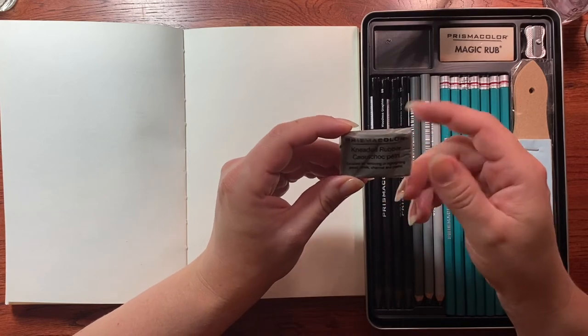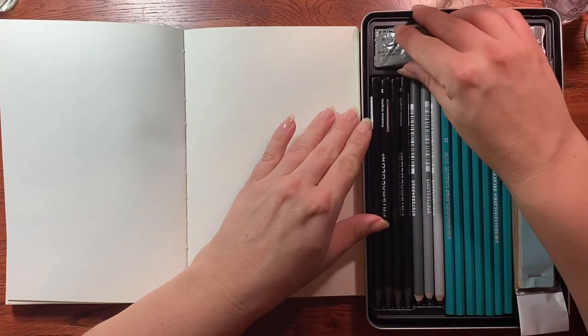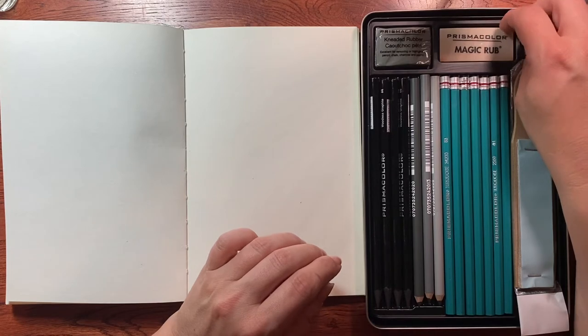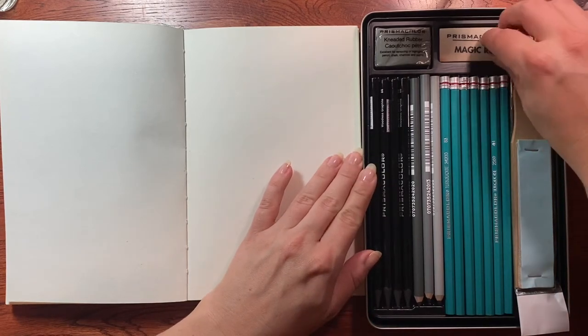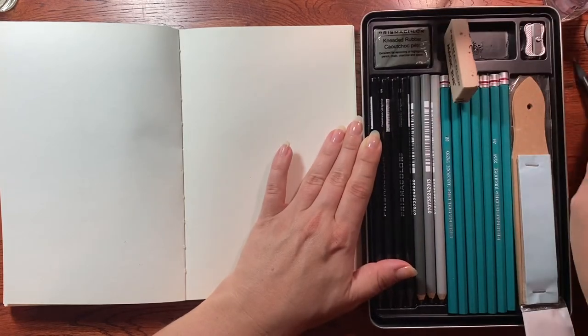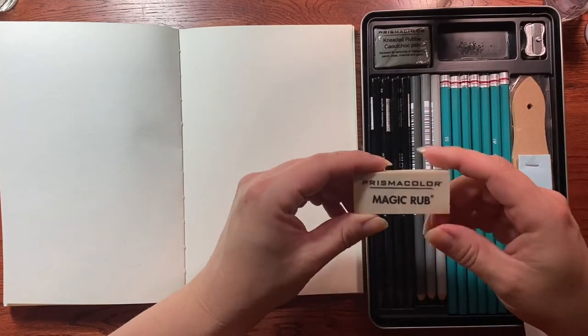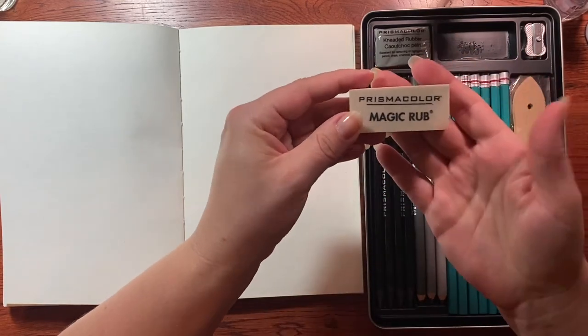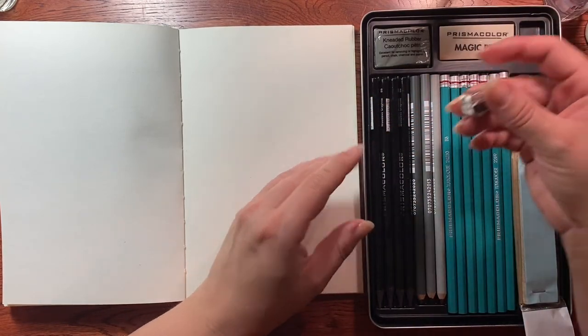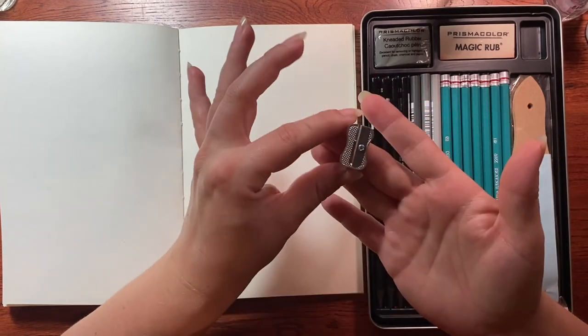I think what you're supposed to be able to do is just mold this like clay and, you know, mold it to make really tiny erasers or really big ones or whatever you need. Okay. Oh, that was lovely. It's glued in there. Magic rub. I'm assuming that this is just a standard eraser. After all that, I'm gonna stick it right back in there.